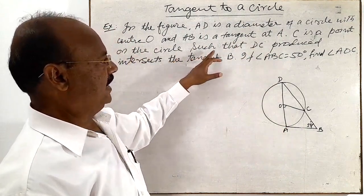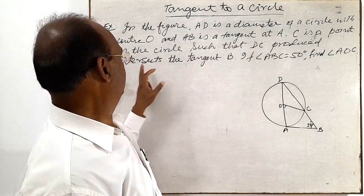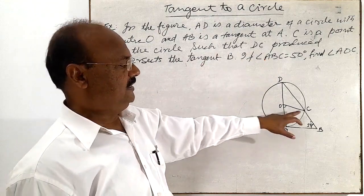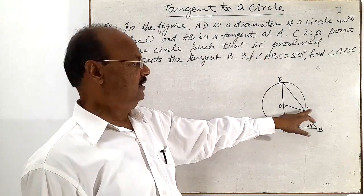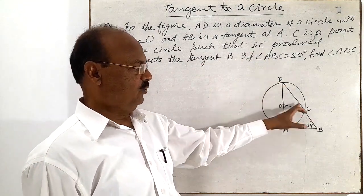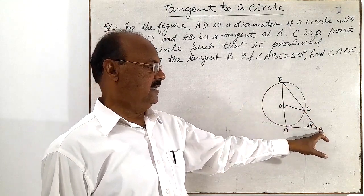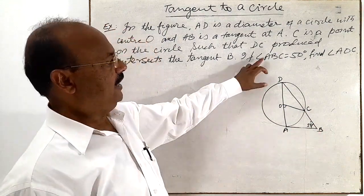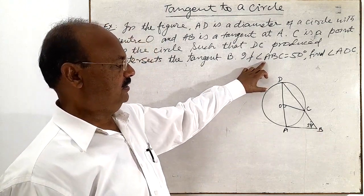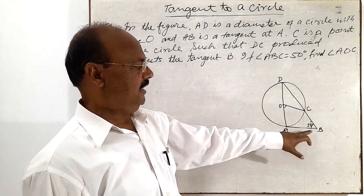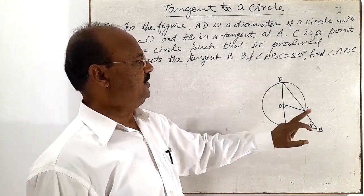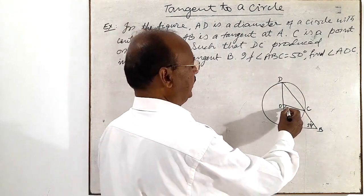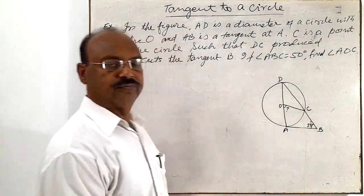C is a point on the circle such that DC produced intersects the tangent at point B. Angle ABC is given as 50 degrees, and we have to find angle AOC.